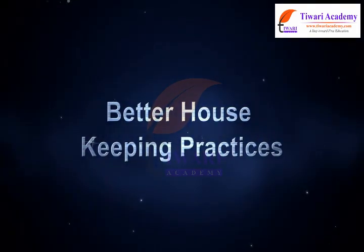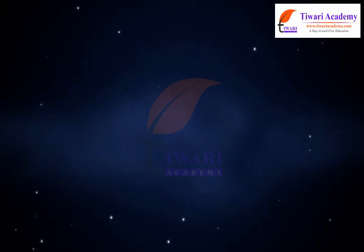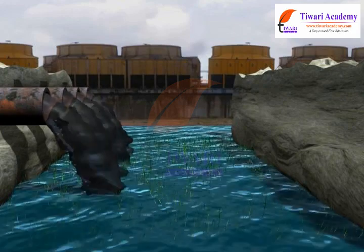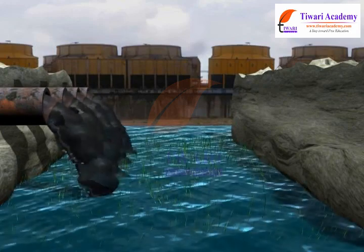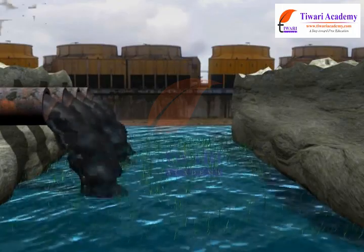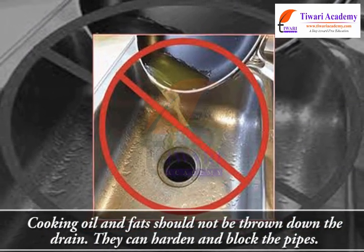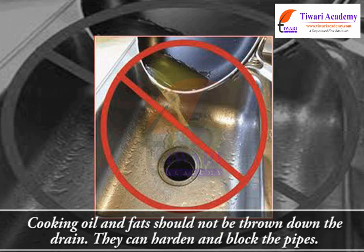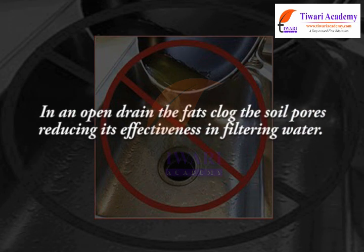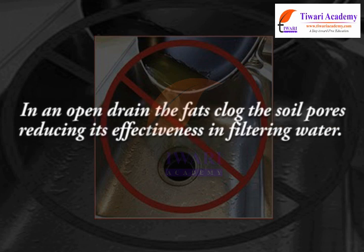Better housekeeping practices: one of the ways to minimize or eliminate waste and pollutants at their source is to see how we release things down the drain. Cooking oil and fats should not be thrown down the drain — they can harden and block the pipes. In an open drain, fats clog the soil pores, reducing its effectiveness in filtering water.